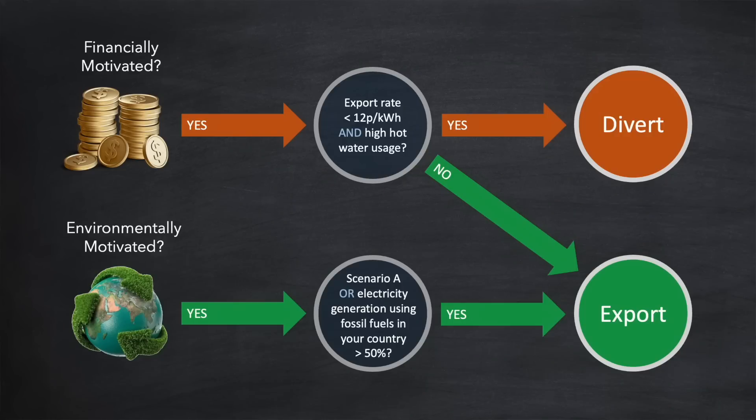And if you're motivated more by the environment, with scenario A, you're always better exporting. And with scenario B, if the percentage of fossil fuel used for electricity generation in your country is 50% or less, then diverting is better.